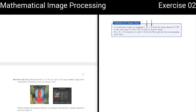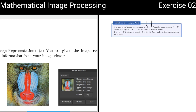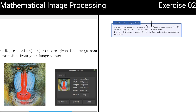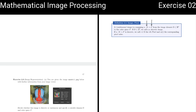We are given this image of a monkey. The image properties show width and height are 512 pixels. The question is for you to decide whether this image is discrete or continuous, and to specify a suitable domain and color space.